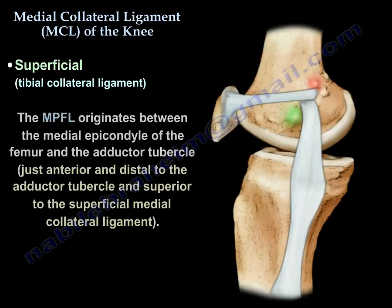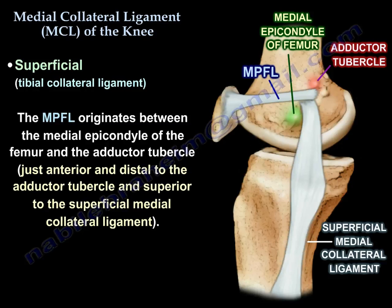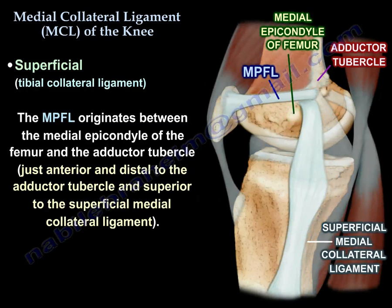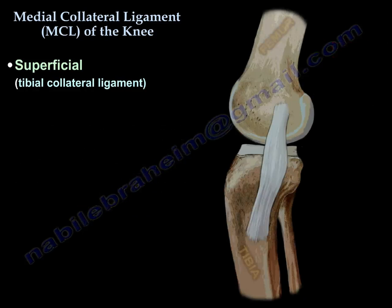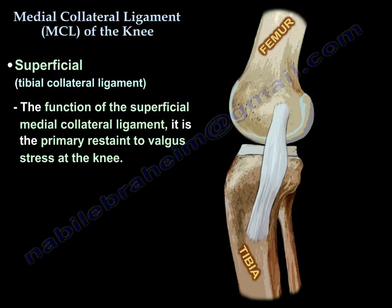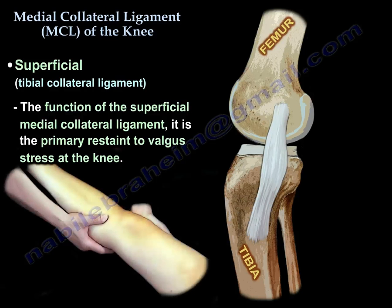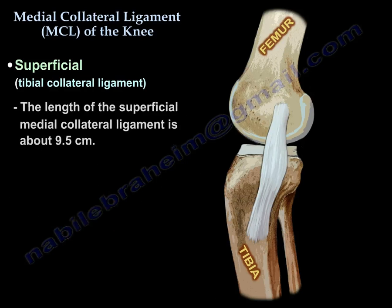The medial patellofemoral ligament originates between the medial epicondyle of the femur and the adductor tubercle, just anterior and distal to the adductor tubercle and superior to the superficial medial collateral ligament. The function of the superficial medial collateral ligament is the primary restraint to valgus stress at the knee, and its length is about 9.5 cm.